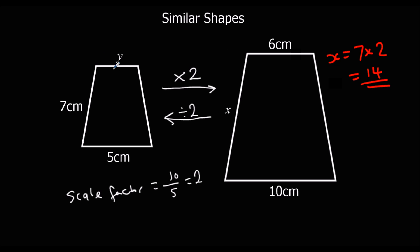And I've got this y here, and that's the same side as the 6 on this one. So to find y, I do 6, and I go backwards, so I divide by 2, and that gives me 3. So x is 14 and y is 3.